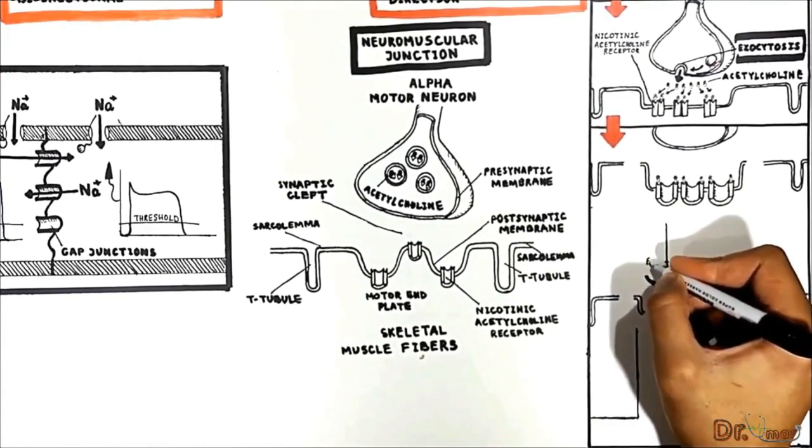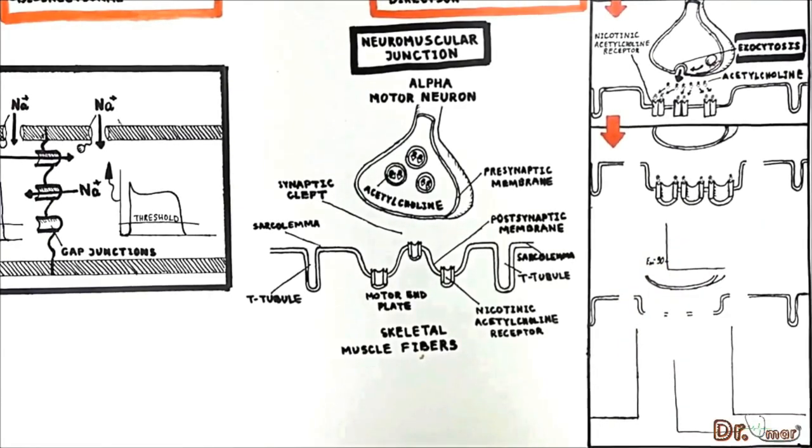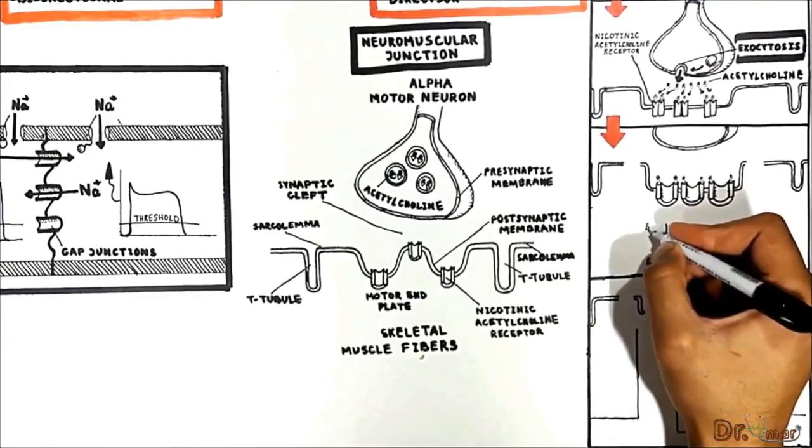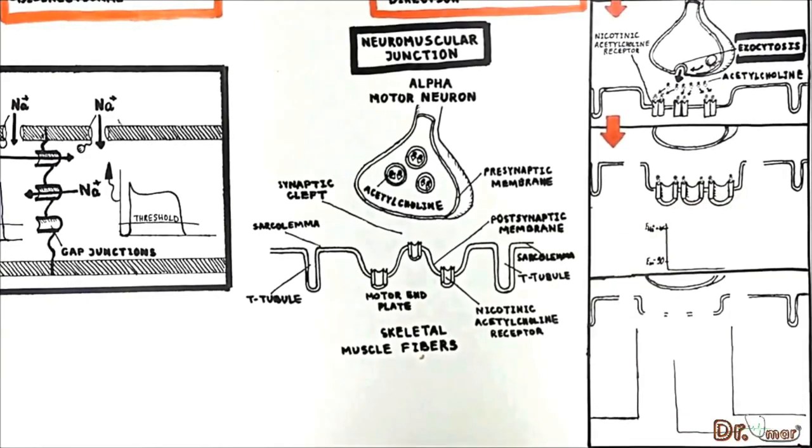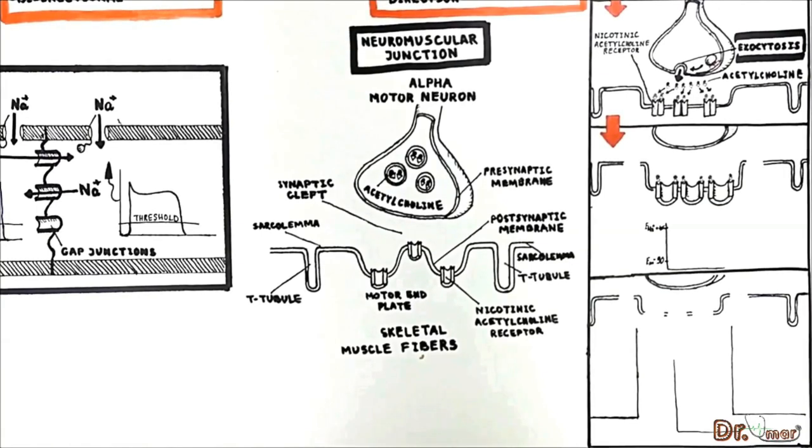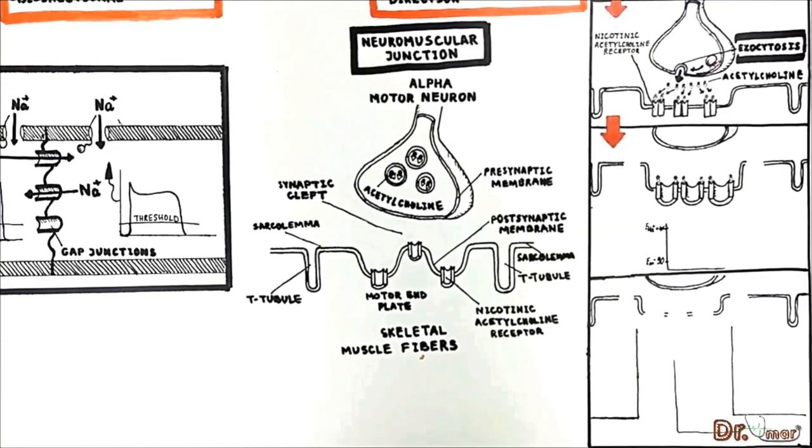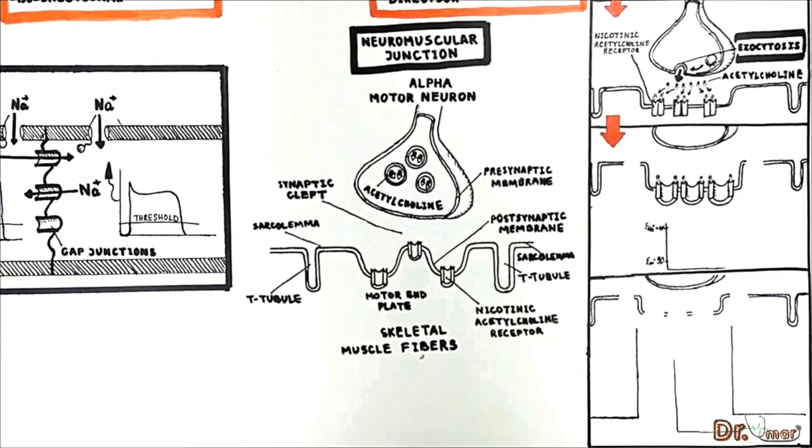because the membrane potential in a motor end plate is negative 90 mV, which is very far from sodium equilibrium potential, we have a greater net force on sodium when compared to potassium whose equilibrium potential is close to negative 90 mV.